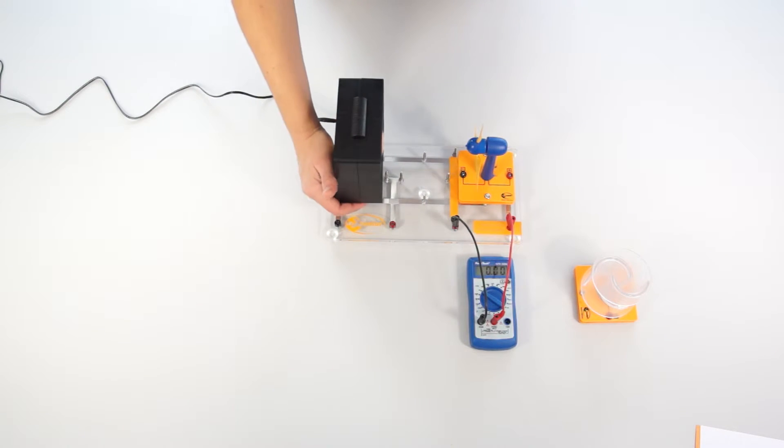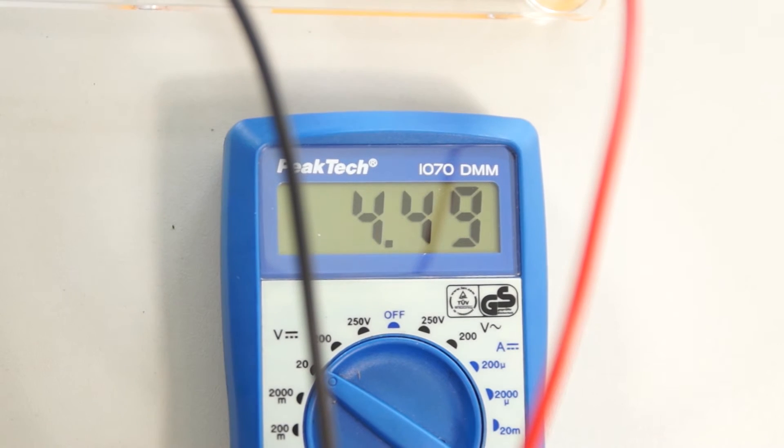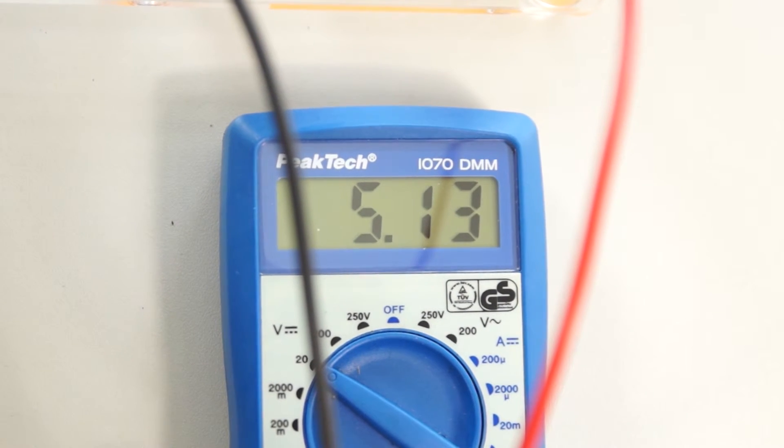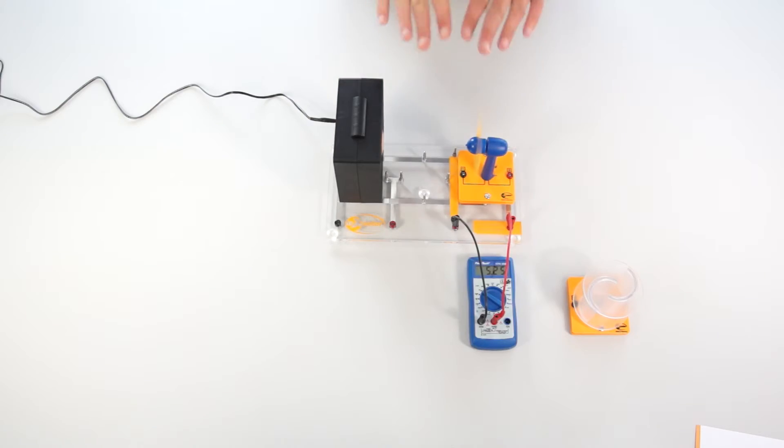We turn on the wind machine and see how the wind rotor begins to rotate. Thereby the voltage on the meter begins to increase. With our classic wind turbine in this structure we can now generate a voltage of 5 volts.